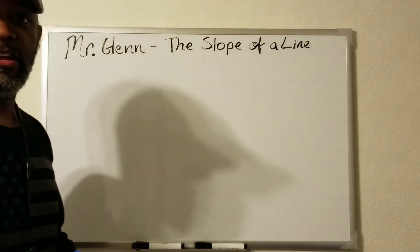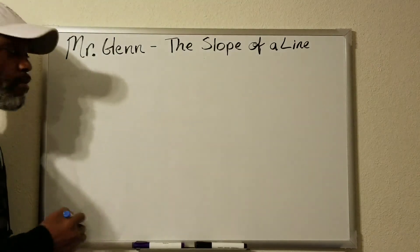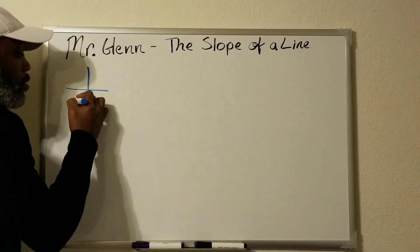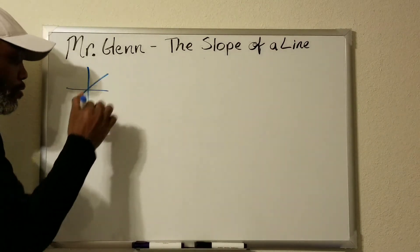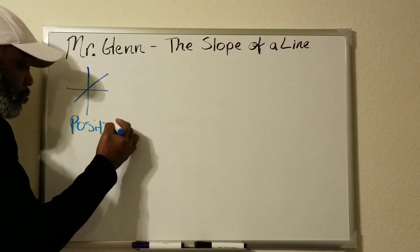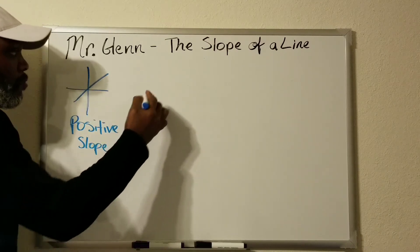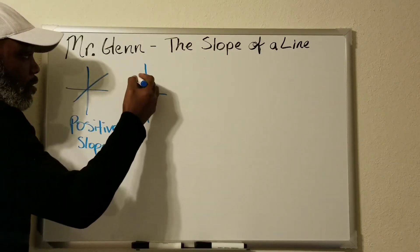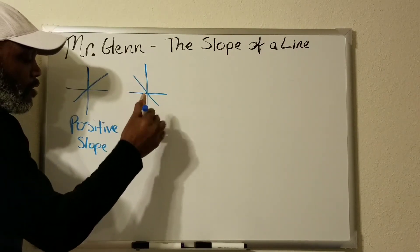Good evening everyone, this is Mr. Glenn. We're going to cover the slope of a line today. There are four types of slope. One of them is called the positive slope — it goes from left to right upward. Then you have, you guessed it, the negative slope — it goes from left to right downward.